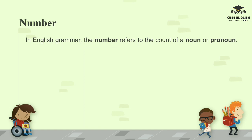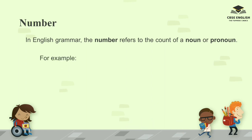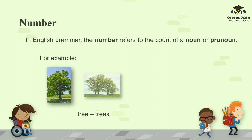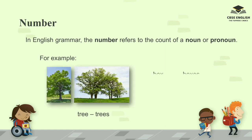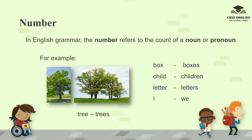In English grammar, the number refers to the count of a noun or pronoun. For example: tree, trees; box, boxes; child, children; letter, letters; I, we; it, they.